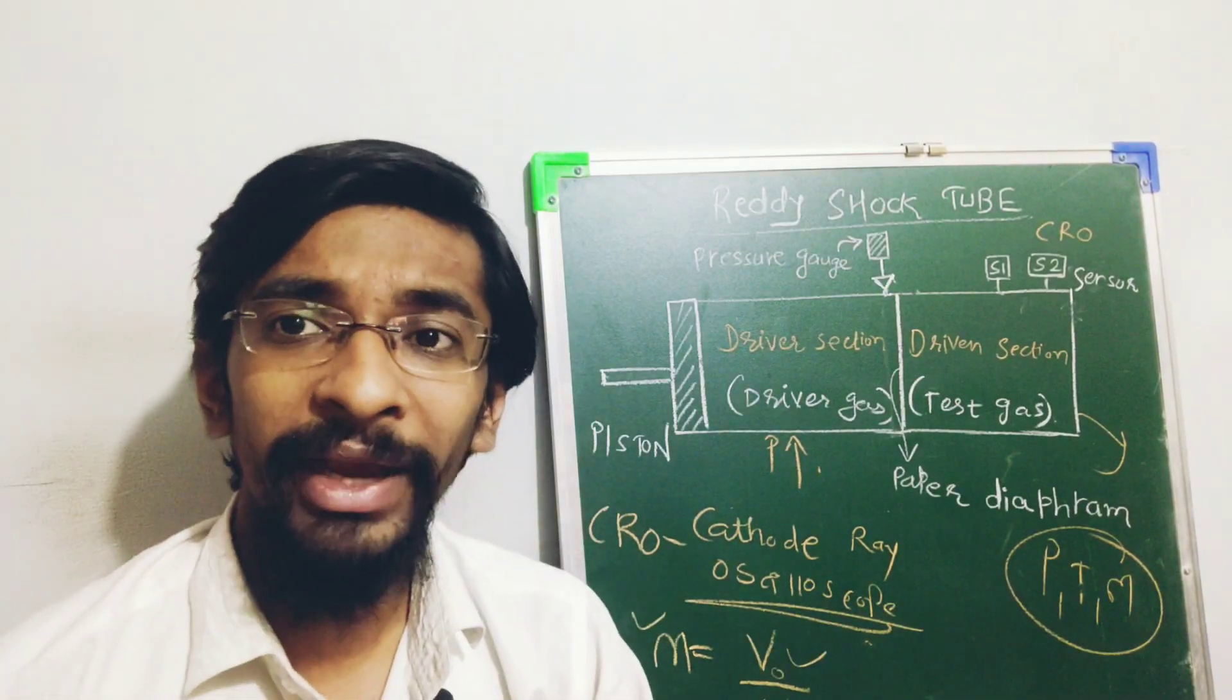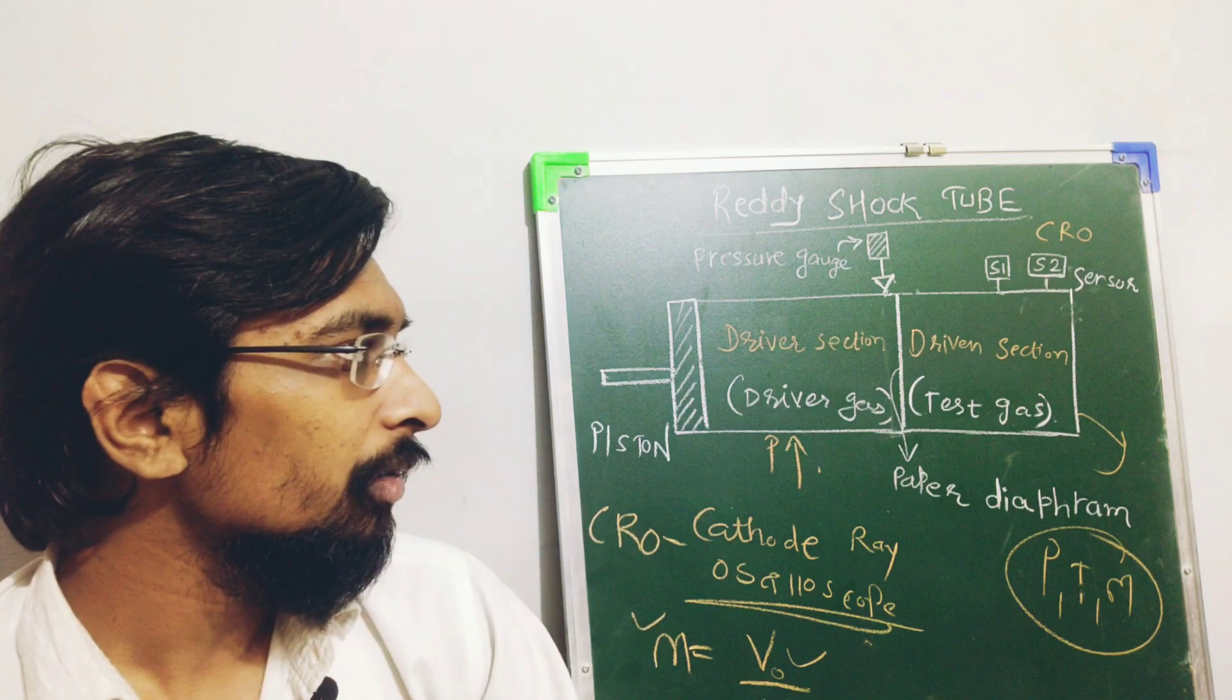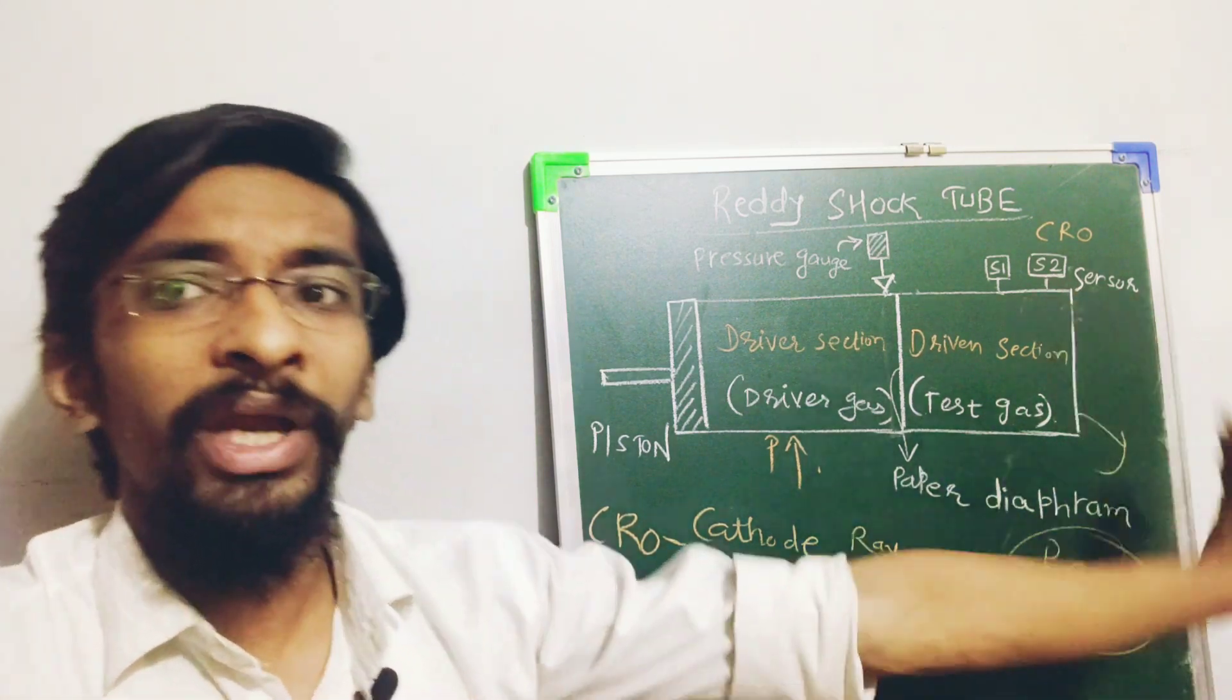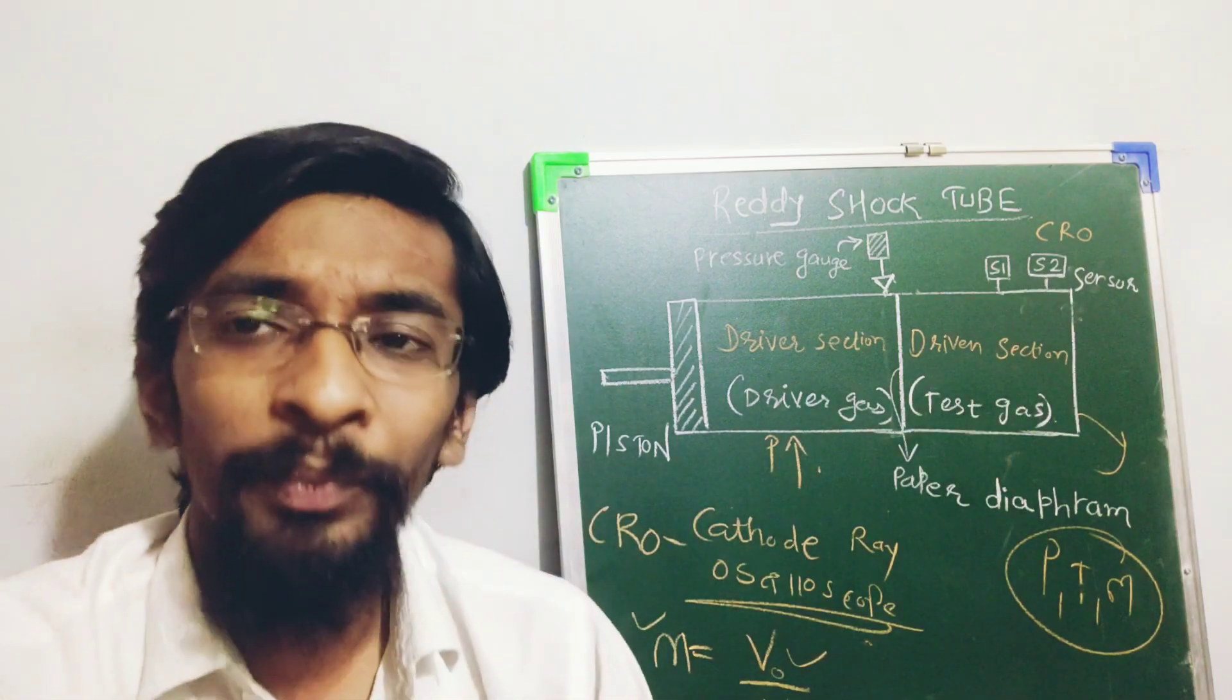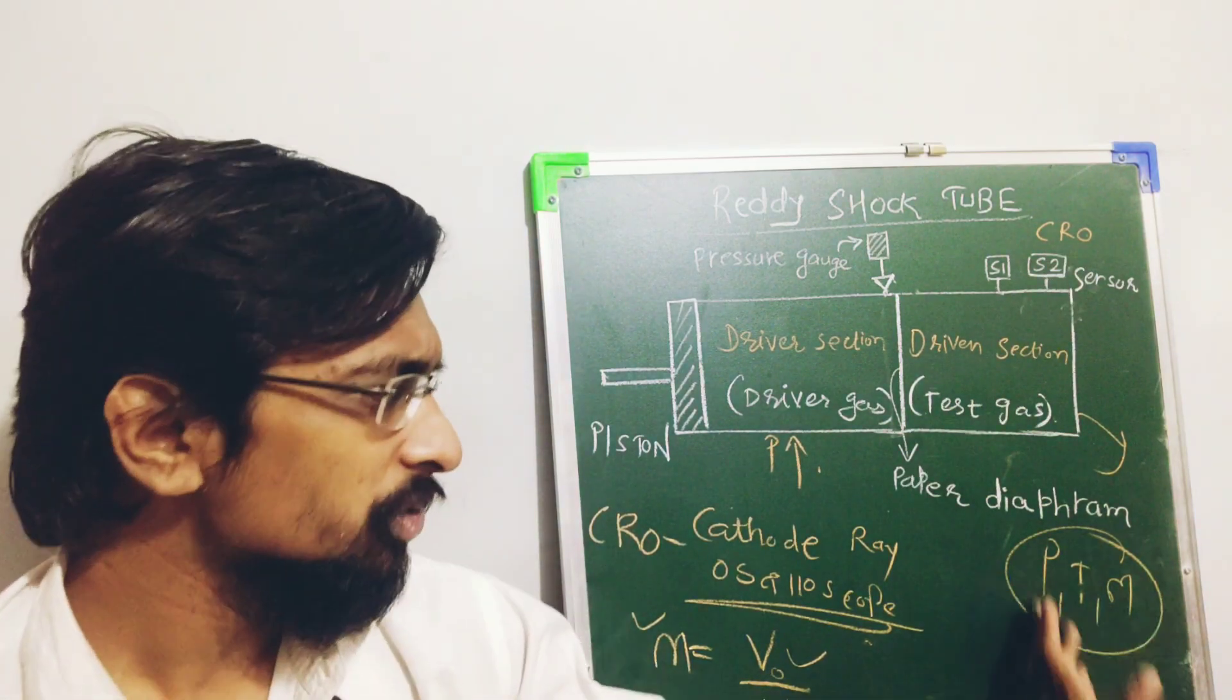The most important is the Mach number, the pressure and temperature. Without having this such kind of paper diaphragm and all, we can find using this oscilloscope. But the main intention is to find the Mach number which is also associated.